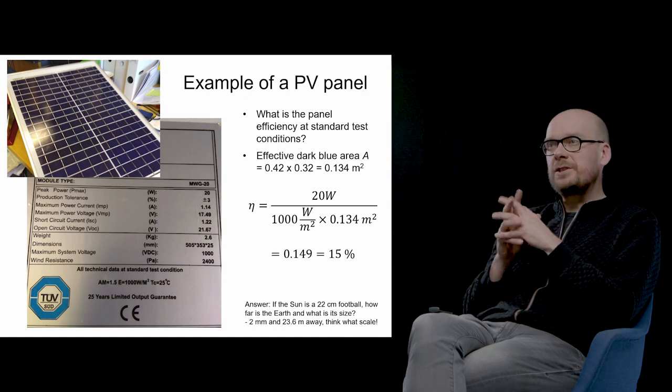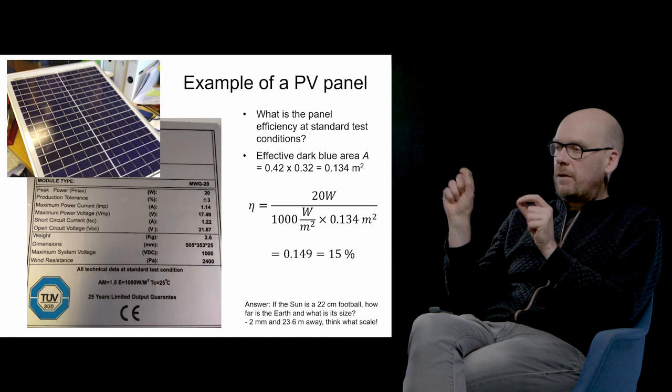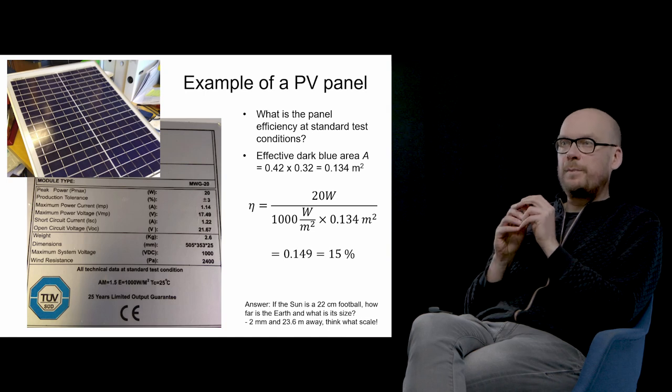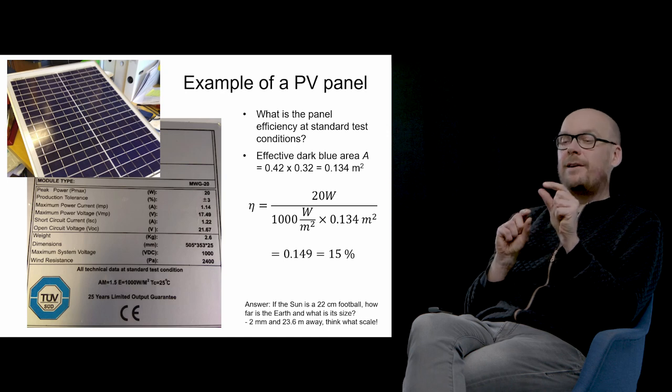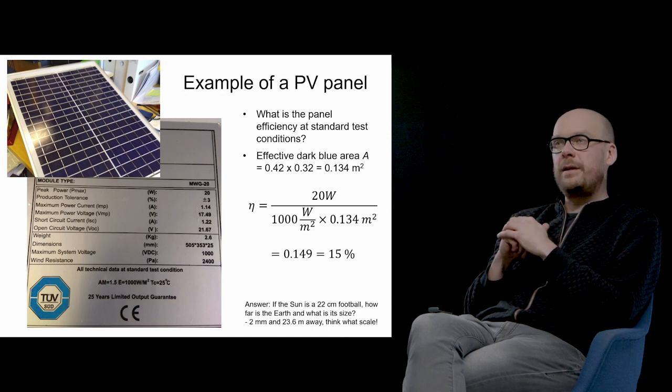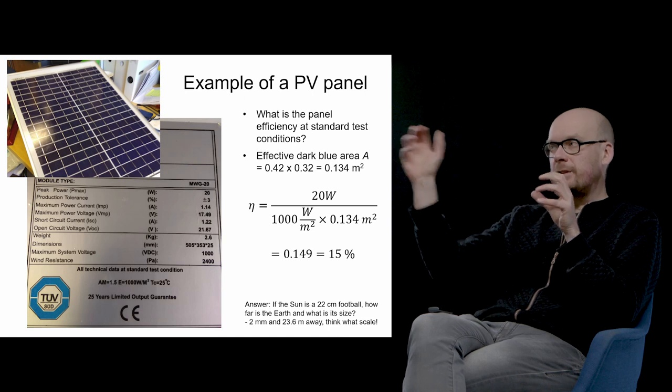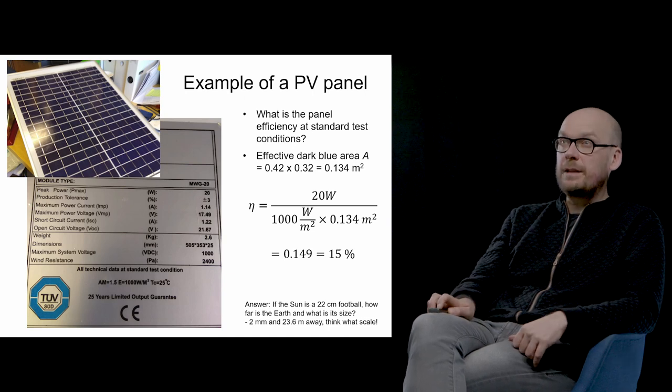The answer to the football question: the distance of Earth from this football would be roughly 24 meters, and the Earth would be 2 millimeters in diameter. So think about the scale of the solar system.